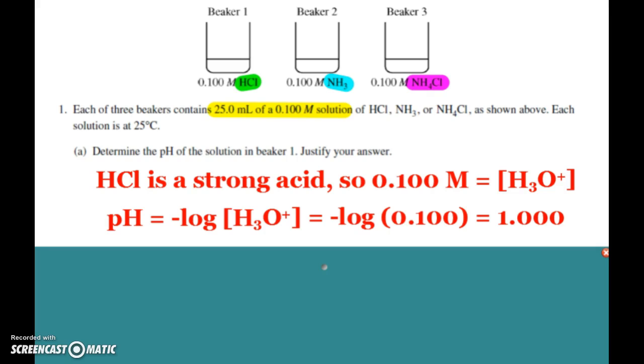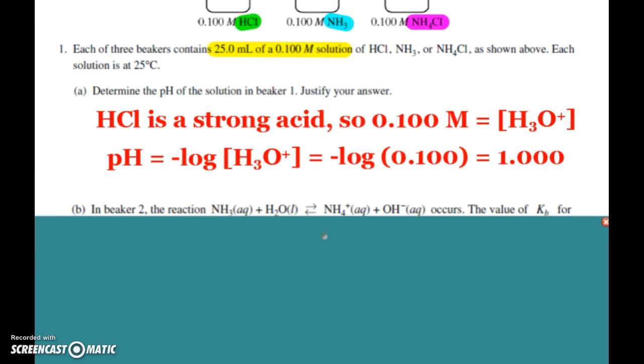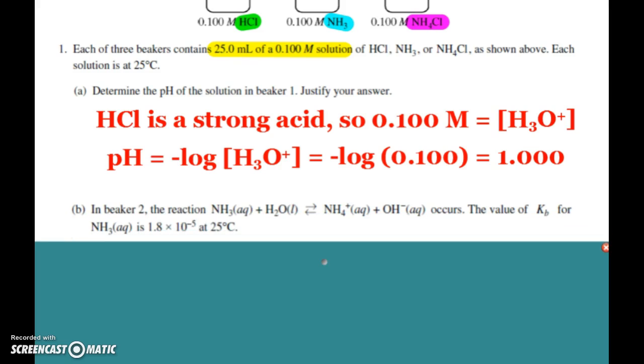Now I wrote it as 1.000. If you remember, technically however many sig figs are in the concentration of hydronium, that's how many decimal points or numbers after the decimal that you report. I think they'd be okay on this question if you just said pH of 1, but just as a reminder I put that there. Now the second part asks us, in beaker 2 we have the reaction ammonia plus water makes ammonium plus hydroxide.